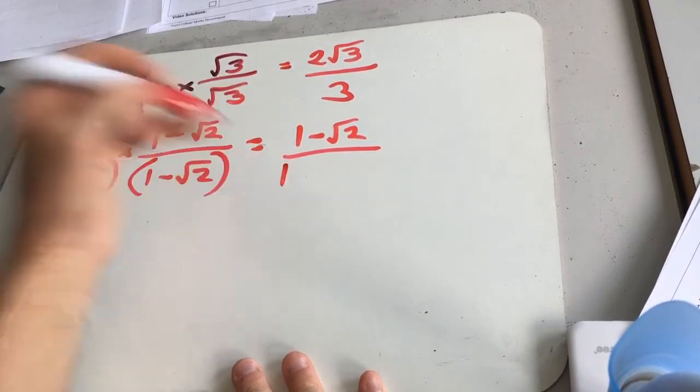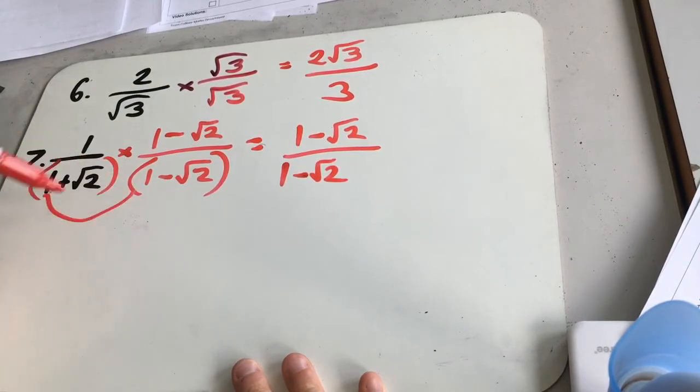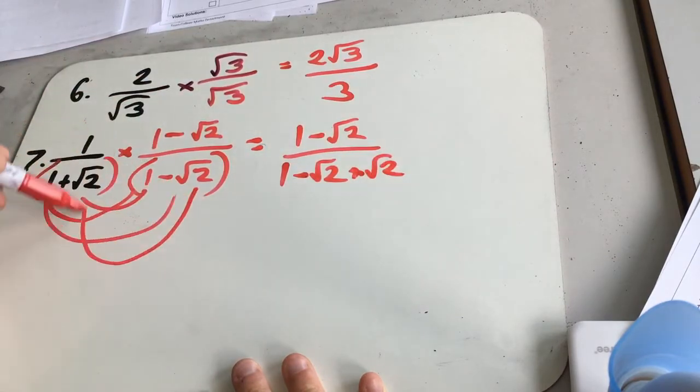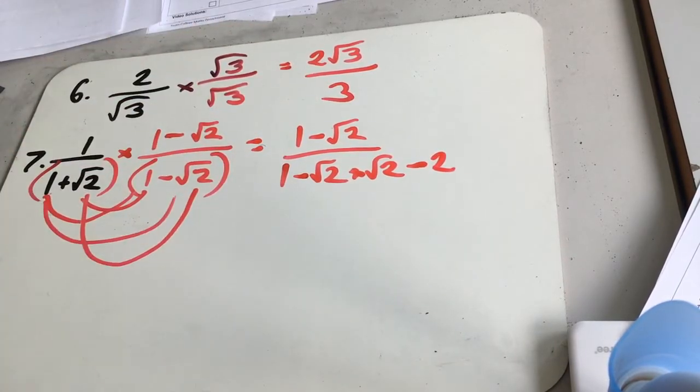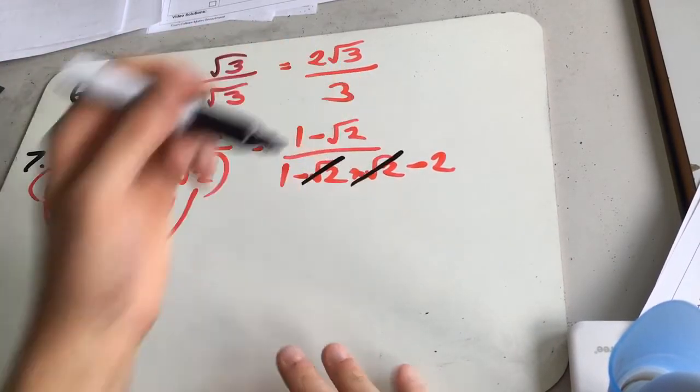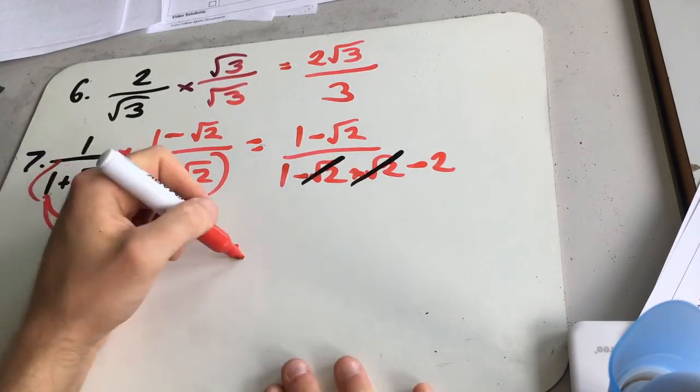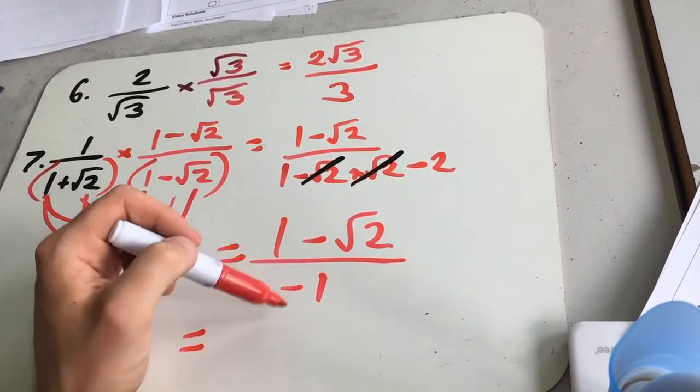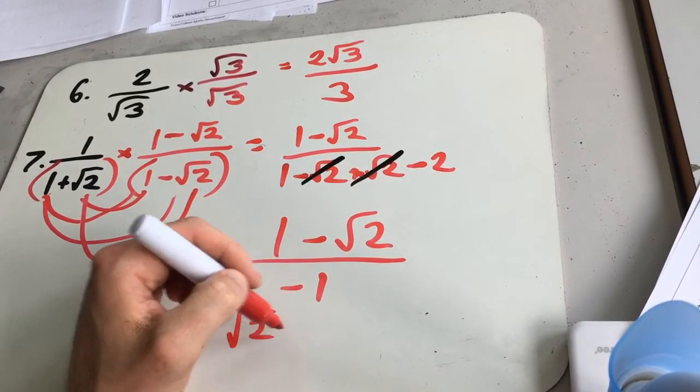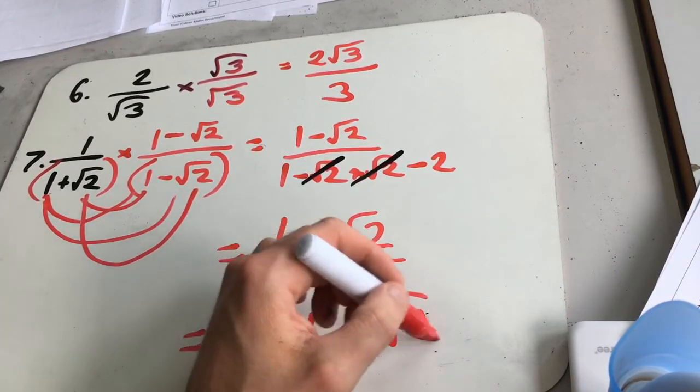1 times minus root 2 is minus root 2. 1 times plus root 2 is plus root 2. And the last bit, root 2 times root 2 is minus 2 there. So these two terms are going to cancel out. So we end up with 1 minus 2 on the bottom, which is going to be a minus 1. So 1 minus root 2 over minus 1. Which, if you wanted to make it a bit neater, we could times through by minus 1 and get root 2 take 1 over 1, which is root 2 minus 1.